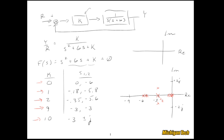As K increases beyond 9, the poles go off into the complex plane — up to about negative 3 ± j. Drawing arrows on this: at K = 0 we have poles at negative 6 and 0; as K increases, the closed-loop poles move toward each other, meet at negative 3, and then branches go off into the complex plane — a vertical line — heading to infinity.